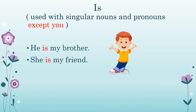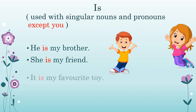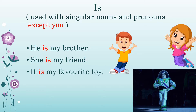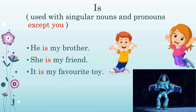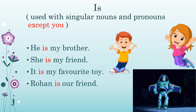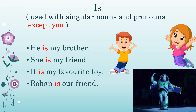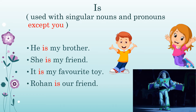She is my friend. She is a pronoun used for one person belonging to feminine gender, or a girl or a female. It is my favorite toy. It is a pronoun used for one animal or one thing. Rohan is our friend — Rohan again is one person. Is is used with singular nouns or pronouns.